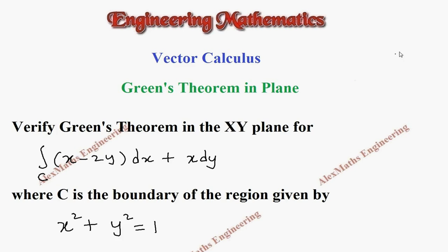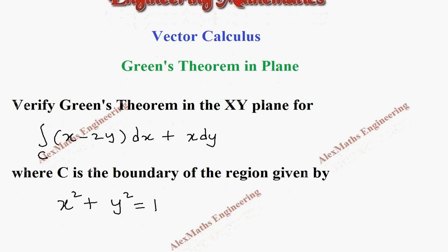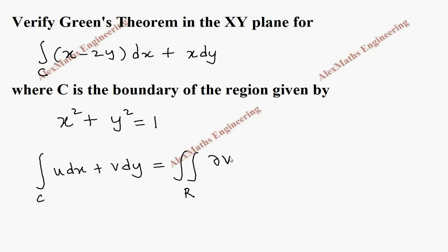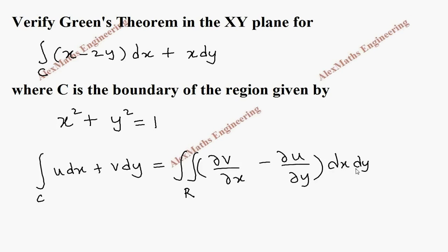Hi students, this is Alex. In this video we are going to verify Green's theorem. The Green's theorem statement is: integral over C of u dx plus v dy equals double integral over the region R of (∂v/∂x minus ∂u/∂y) dx dy.